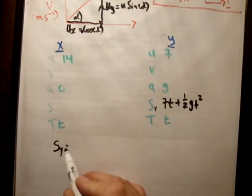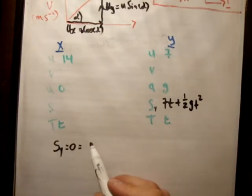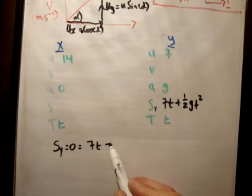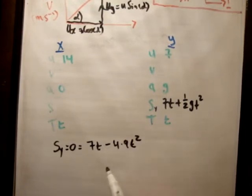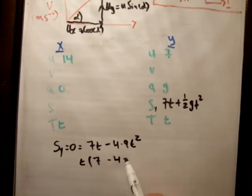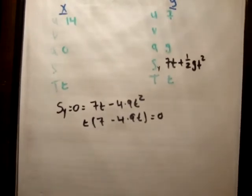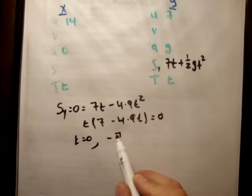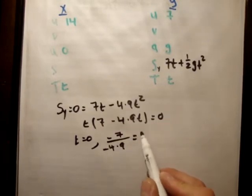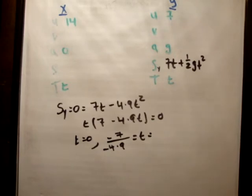So s_y is equal to 0 is equal to 7t minus, we'll say, 4.9t squared. Factor out the t because it's just easier. So we get 7 minus 4.9t is equal to 0. If two things there are multiplied together and they make 0, then one of them must be 0. And we get -7 over -4.9t, so t is equal to 1.42.